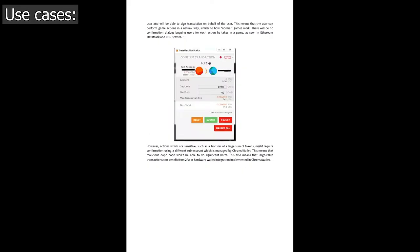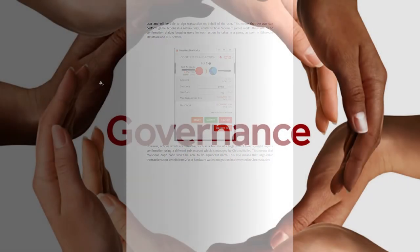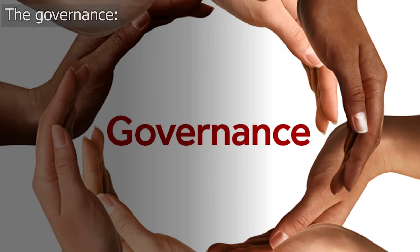On Chromia, it's the providers that hold governance votes, and a 66% majority is needed for approval. Proposals can include system updates, tuning parameters such as prices for running dApps, acceptance of new providers, or banning of bad actors.